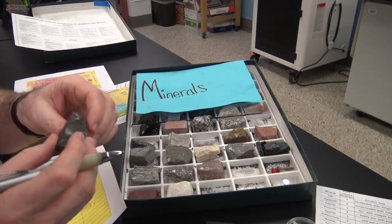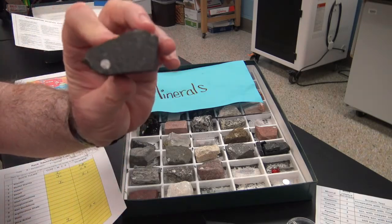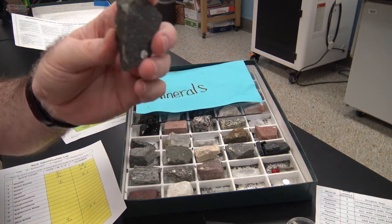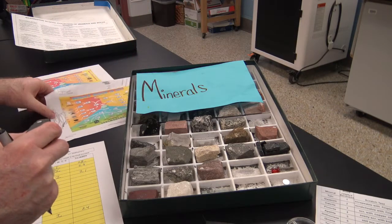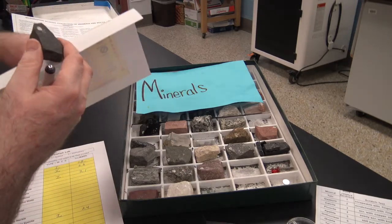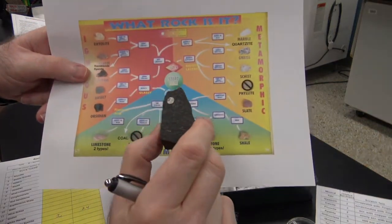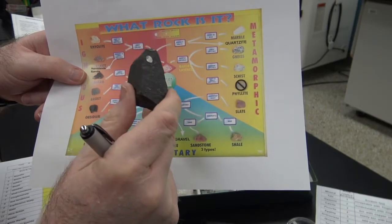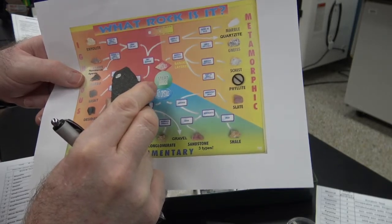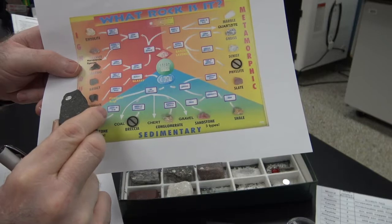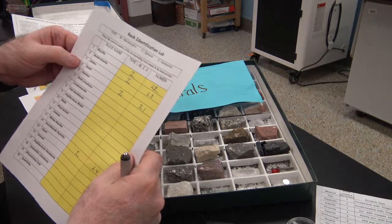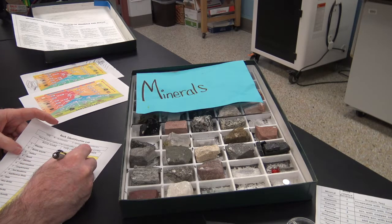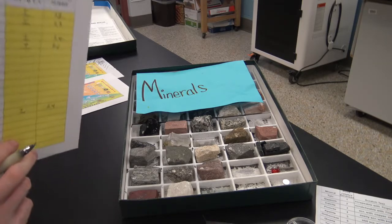Ready for the next rock? If you're not, you can hit pause — it's your video. This one's one of my favorites; it's very nondescript, but if you watched the lesson yesterday you know this is similar to one I found out in the Pacific Ocean. Let's use the key. Very, very fine crystals — I don't think it's banded. It's definitely dark, tiny to small crystals, and that makes it basalt. Basalt is number 25, it's number four on the chart — igneous.